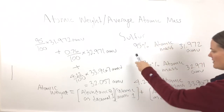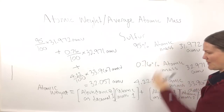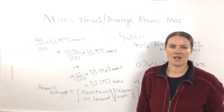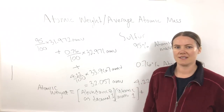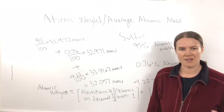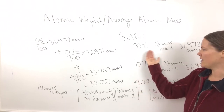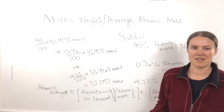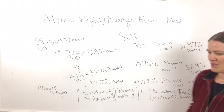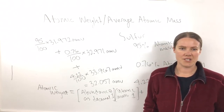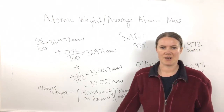This is how you calculate the atomic weight of sulfur, knowing the percent abundance and atomic mass of each sulfur isotope. You apply this same method to calculate the atomic weight of any element, as long as you know the percent abundance and atomic mass of each of its isotopes. I hope this video was helpful — thanks for watching.